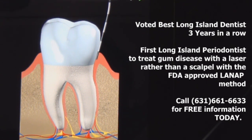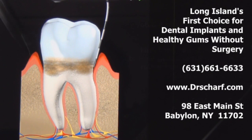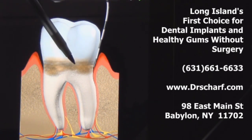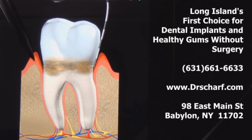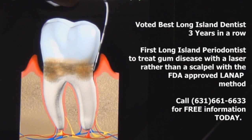What happens in periodontal disease is that bacteria accumulates around the tooth and hardens into tartar. That's an irritant that causes the gum to be inflamed and causes the gum to separate from the tooth. Left untreated, this spreads deeper to the bone and causes bone loss around the tooth.